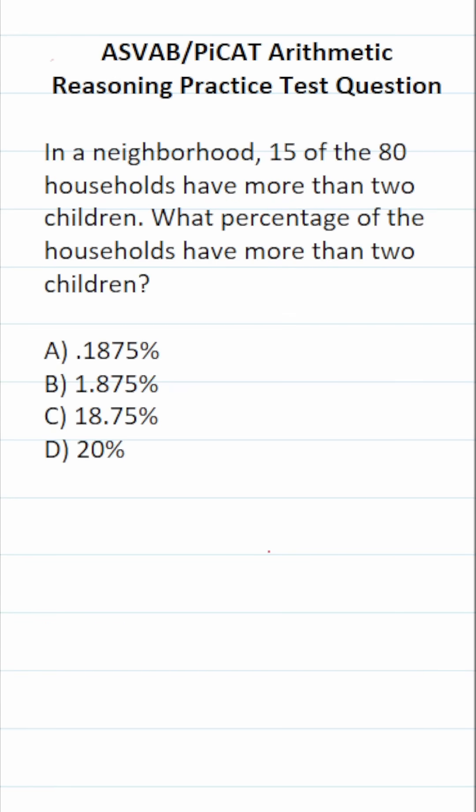This arithmetic reasoning practice test question for the ASVAB and PiCAT says, in a neighborhood, 15 of the 80 households have more than two children. What percentage of the households have more than two children?